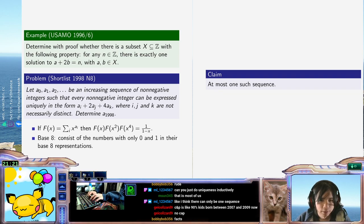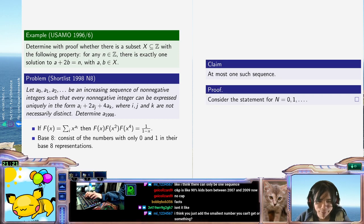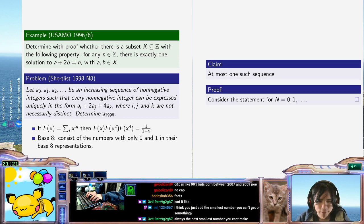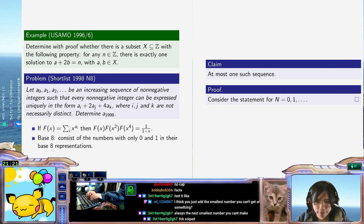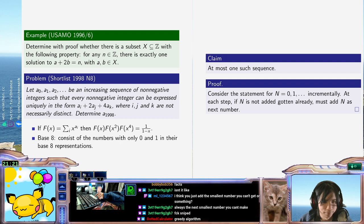We claim, so consider the statement for n equals 0, 1, 2... the following algorithm incrementally. And then at each step, if n is not gotten already, must add n as next number. Because, you know, otherwise you die. And then, so there's at most one sequence, and this is it.